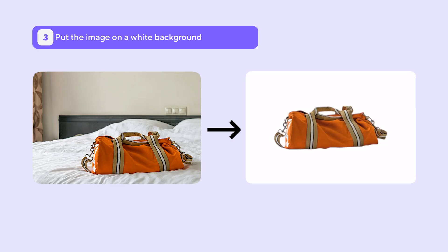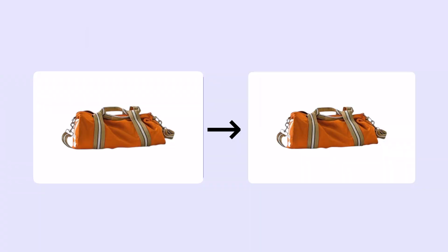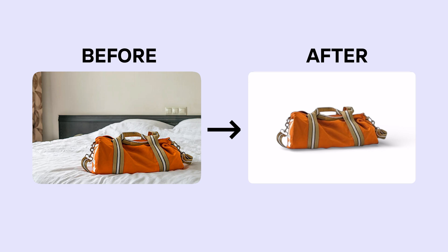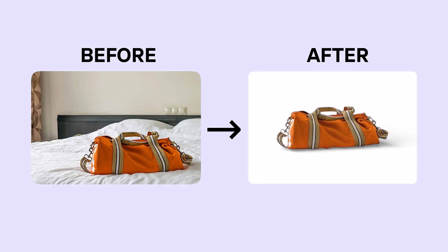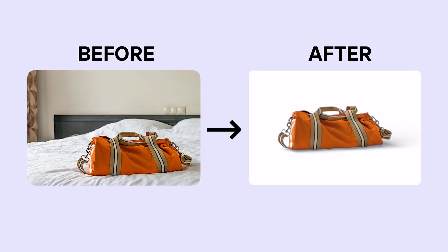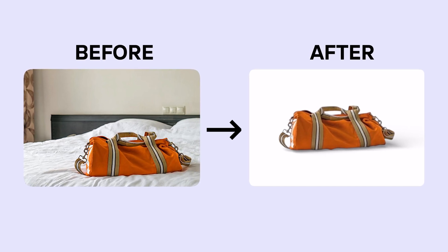Third, put the image on a clean white background so the cognitive load on the shopper is reduced for easier decision making. Fourth, add a shadow so the image doesn't look strange floating on a white background. Notice here: none of these AI-powered edits actually change the product you're buying. They just improve the way it's presented to you.